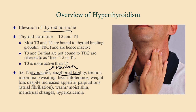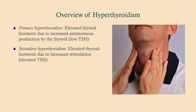Palpitations, warm and moist skin as opposed to cold and dry skin. Menstrual changes — that's seen in hypothyroidism too. And you can even get hypercalcemia. Now primary hyperthyroidism, like primary hypothyroidism, is a problem with the thyroid. This is elevated thyroid hormone due to increased autonomous production by the thyroid. As a consequence, because you have increased thyroid hormone, there's going to be increased negative feedback on the hypothalamus and pituitary. Consequently, you're going to have a low TSH.